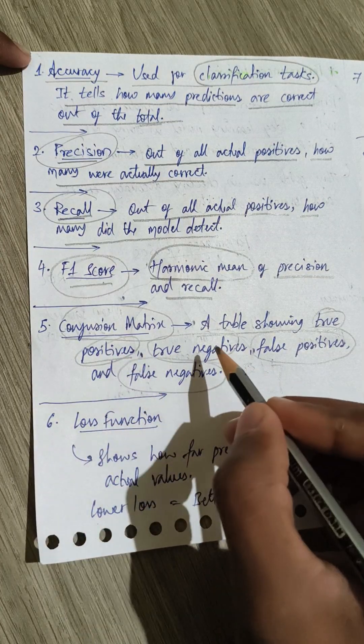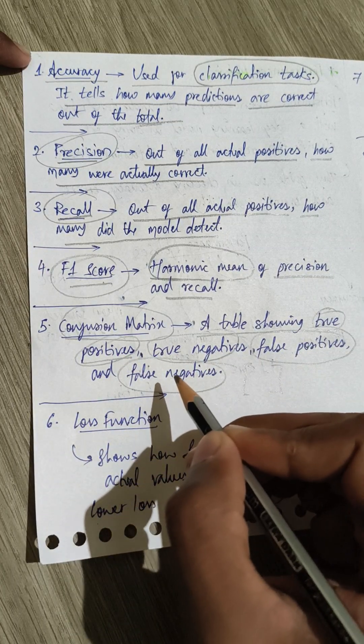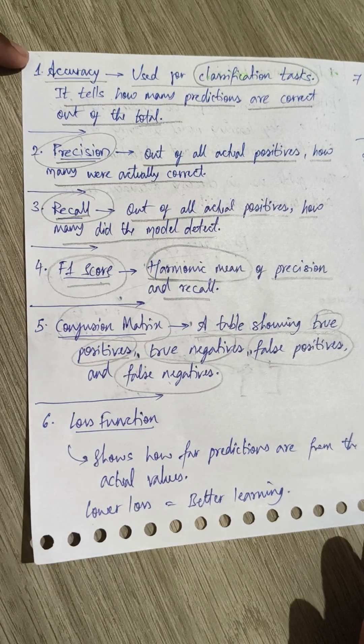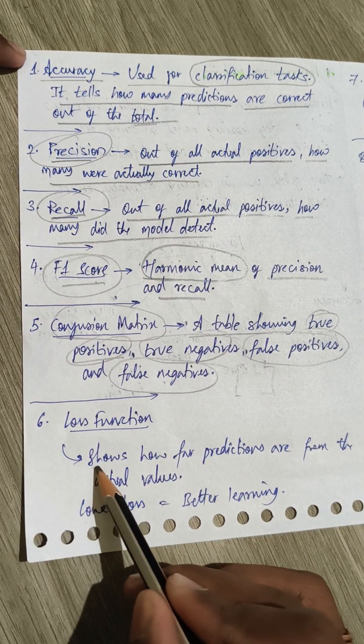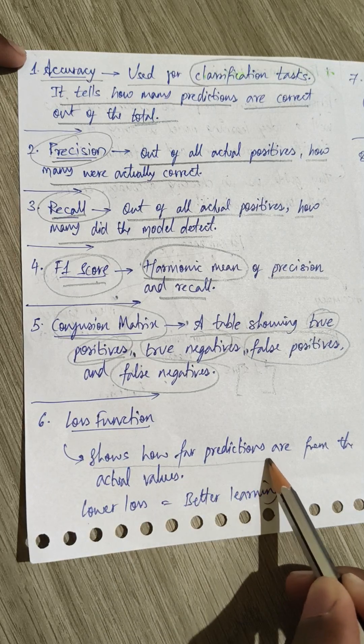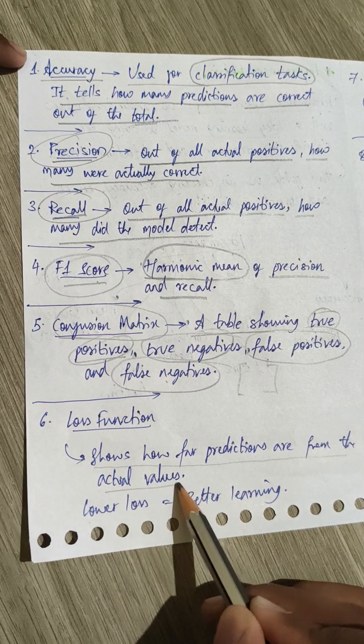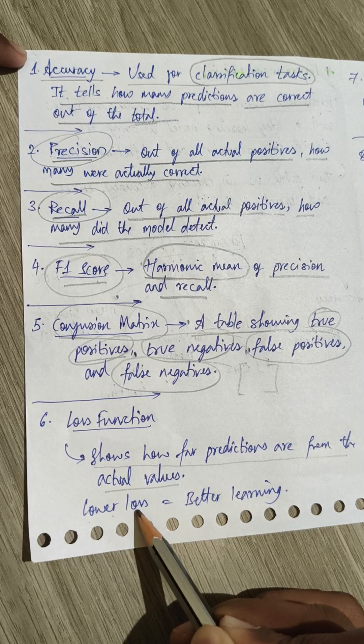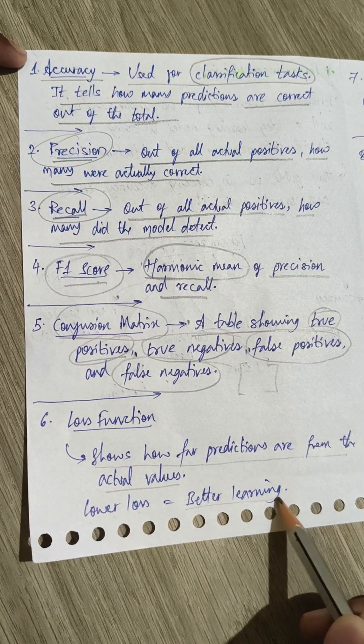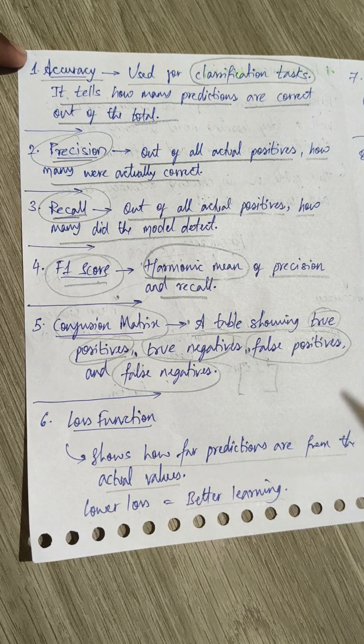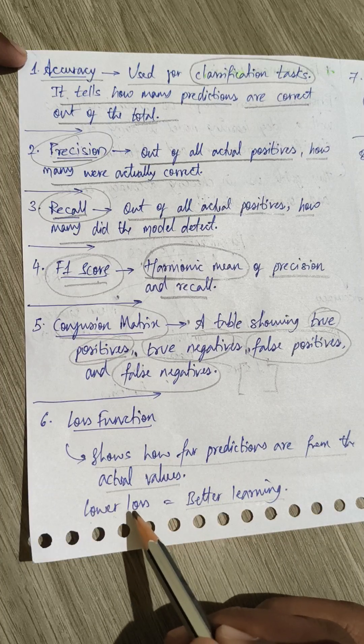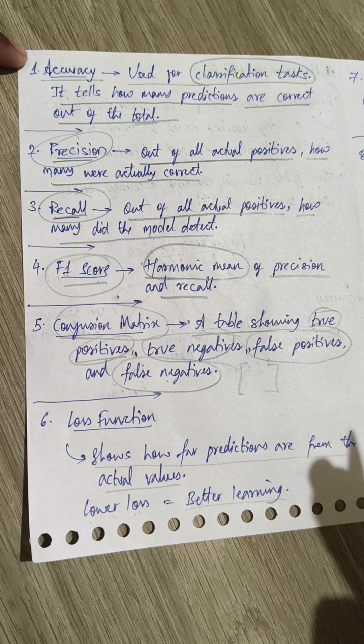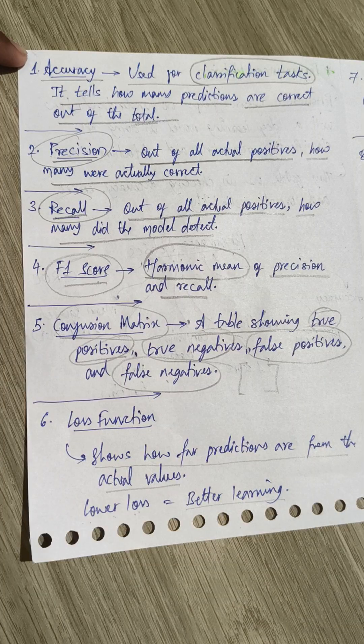Now coming to loss function. Loss function shows us how far predictions are from the actual values. It means if we have lower loss, then the model is learning at a better level. If the loss is high, then the learning is very poor.